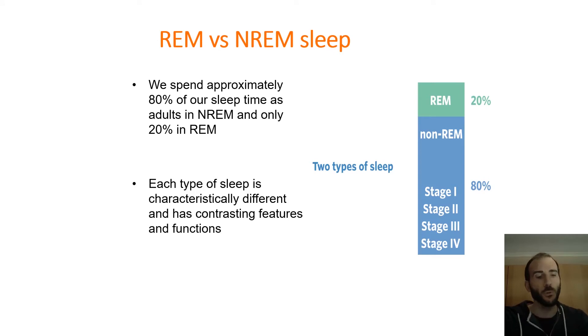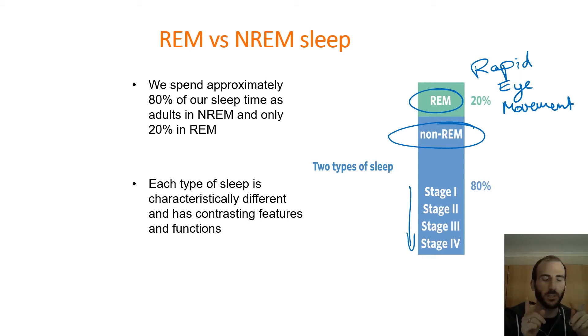So sleep has two main divisions. We spend about 80% of our time in NREM sleep, non-REM sleep. And you can see here, there's four stages of sleep that we'll talk about in a moment. But about 80% of your time spent in that. And then about 20% is spending this really interesting time called REM sleep. REM stands for Rapid Eye Movement. It's a period of sleep where even though your eyes are closed and your body seems relaxed, your eyes are actually moving under the surface. We'll talk about that a little bit more. But each type of sleep has different features and functions, different purposes. 80% in NREM, 20% in REM.